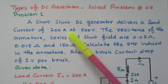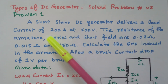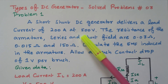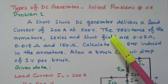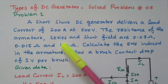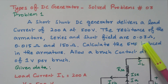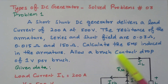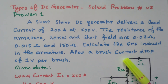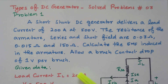A short shunt DC generator delivers a load current of 200 ampere at 500 volts. The resistance of armature, series field, and shunt field are 0.03 ohm, 0.015 ohm, and 150 ohm respectively. Calculate the EMF induced in the armature. Allow a brush contact drop of 1 volt per brush.